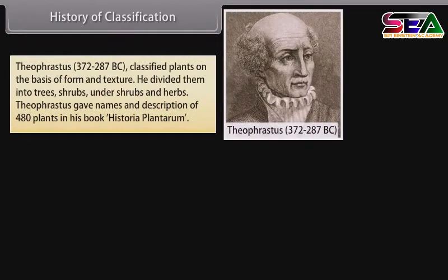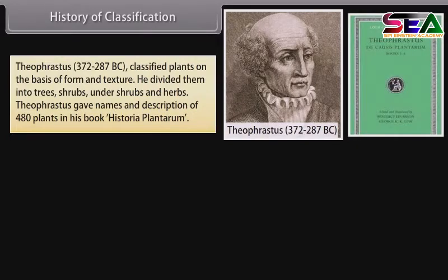Theophrastus (372–287 BC) classified plants on the basis of form and texture. He divided them into trees, shrubs, undershrubs, and herbs. Theophrastus gave names and descriptions of 480 plants in his book Historia Plantarum.